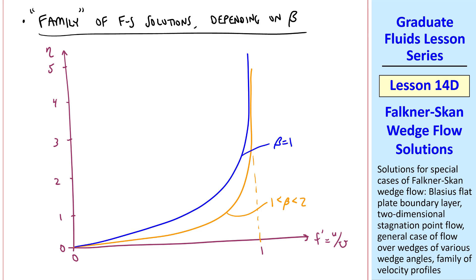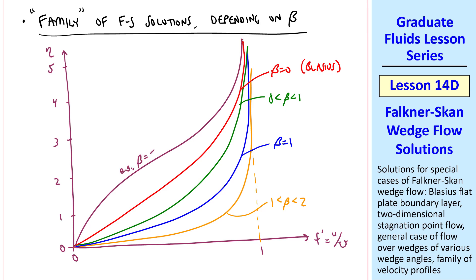Beta equal 1 is the 2D stagnation point flow. When beta is between 0 and 1, we have our wedge flow with a favorable pressure gradient. When beta is exactly 0, this is, of course, the Blasius case, and the profile is linear near the wall, unlike these other curved cases, although I didn't sketch it very well. When beta goes negative, for example, when beta is about negative 0.1, we have an adverse pressure gradient case.